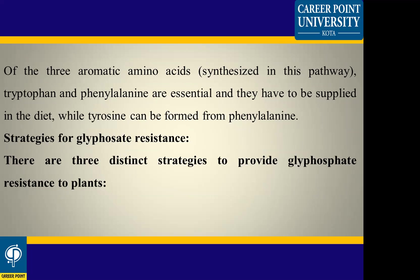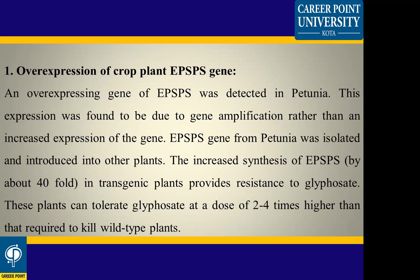Since phenylalanine and tyrosine are essential — needed to form a diet and essential metabolites — blocking this pathway kills the plant. The strategies of glyphosate resistance include three different approaches. The first is over-expression of the crop plant's EPSPS gene. EPSPS enzyme is produced from the EPSPS gene.